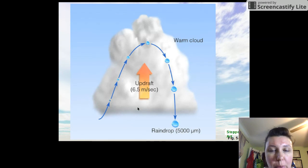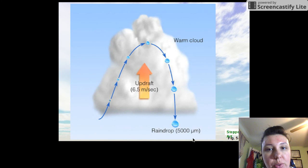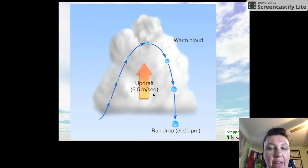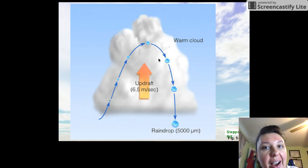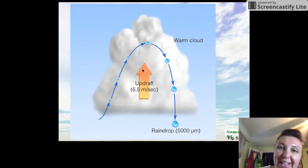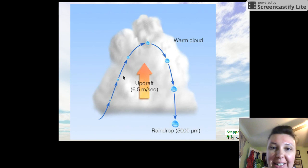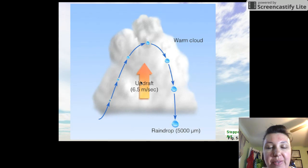Remember that while the illustration shows one droplet, there are hundreds of thousands of droplets doing this at exactly the same time — that's how you get so many raindrops in a rainstorm. It's not just one singular droplet; you have to imagine all of them happening simultaneously.